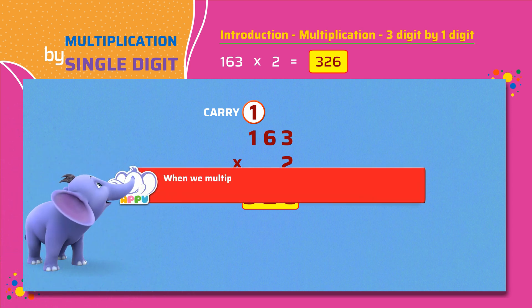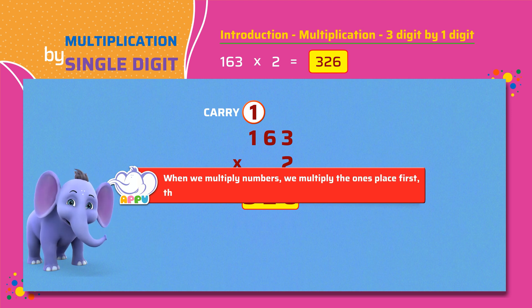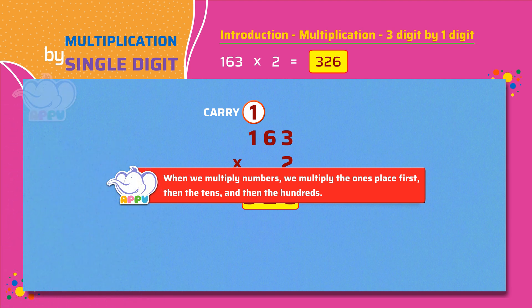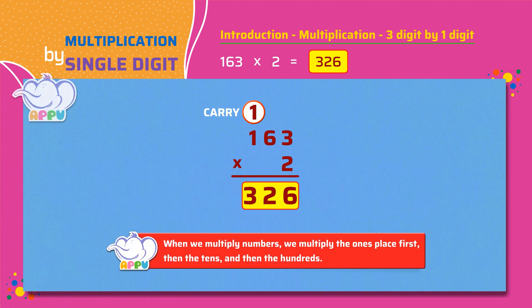When we multiply numbers we multiply the ones place first, then the tens and then the hundreds. Let's look at another example.